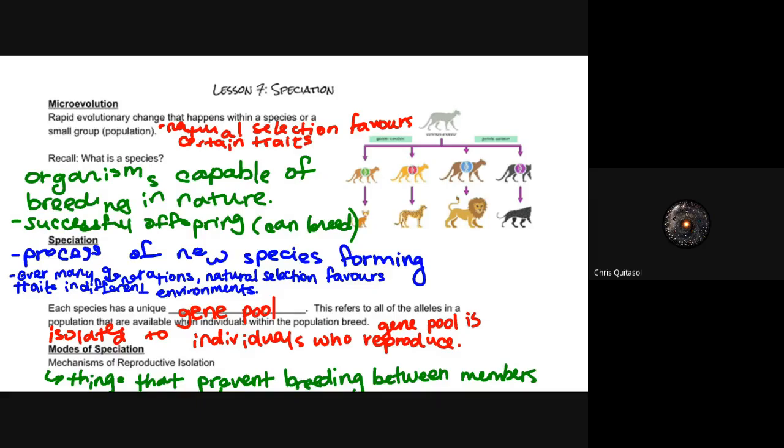Recall that a species is an organism that's capable of breeding in nature. Its successful offspring have those traits that are successful and get passed on. But with regards to microevolution and speciation, it's a process that can go quite quickly. It can be over many generations, like 10 to 100, which is significantly less than thousands of years of natural selection.